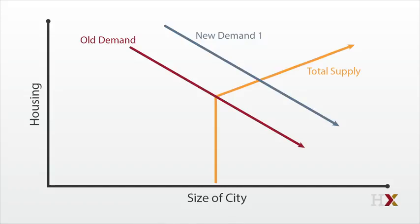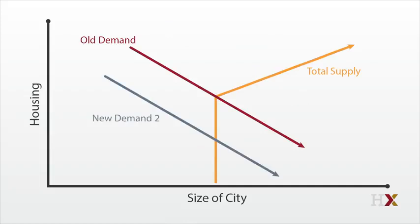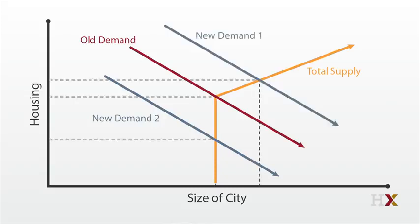But what if demand shifts downward, because either productivity falls or amenities deteriorate? In that case, price certainly falls. But the quantity of homes stays constant, since they've already been built and they are durable. Upward demand shifts show up in both price and quantity. Downward demand shifts just show up in declining prices.